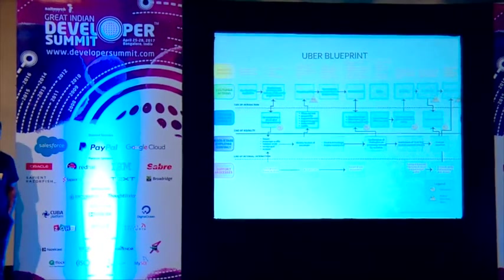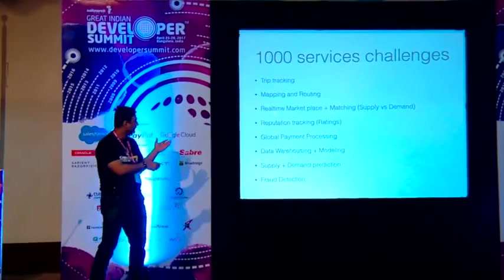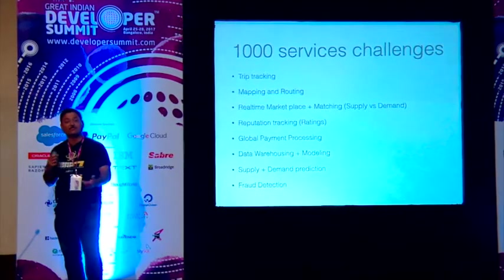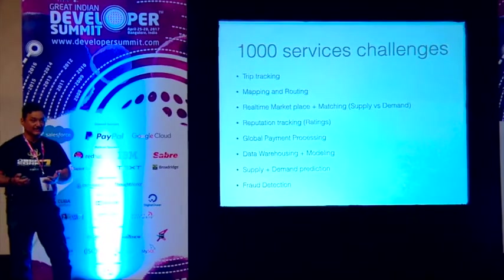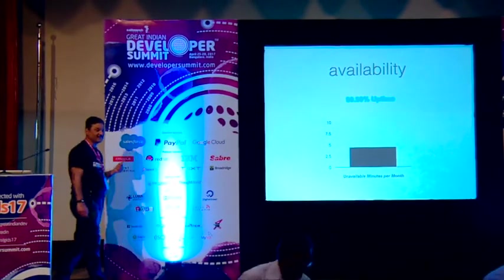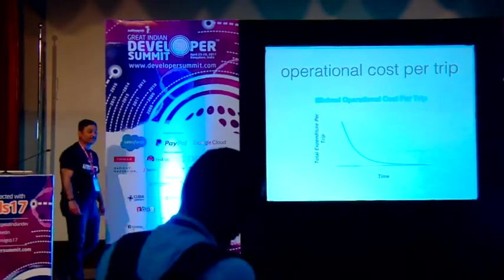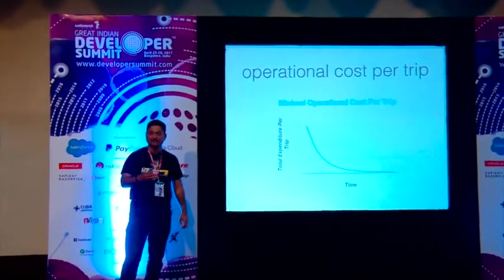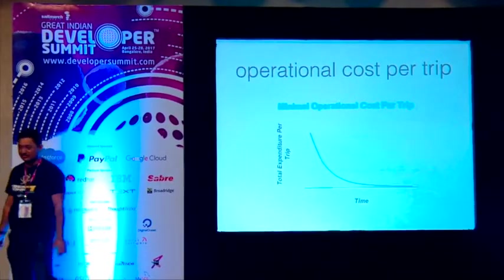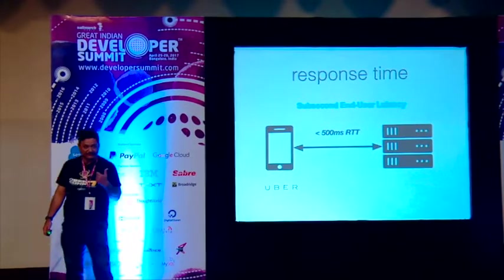Of course, you have to do payment processing too, which is complicated. You can have thousands of services built on top of it. What Uber did was build a microservice architecture, and based on that architecture they were able to perform these operations. They aim for 99.9% availability, minimal operational cost per trip, and a 500-millisecond response time. Those are the three key criteria.